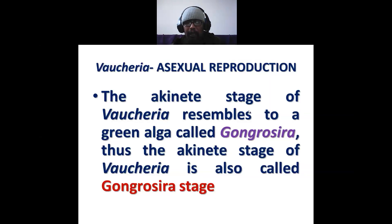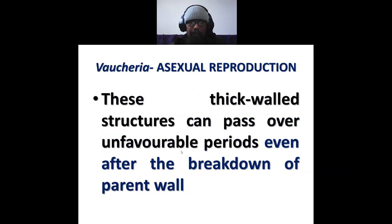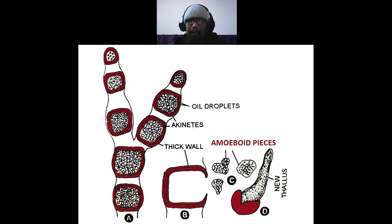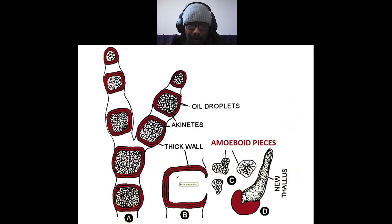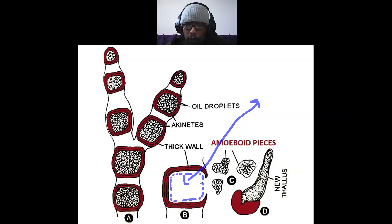On approach of favorable conditions, the akinete germinates. As written in the textbook, either the protoplast intactly germinates to produce a new vegetative thallus of Vaucheria, or the protoplast may break into further smaller pieces.